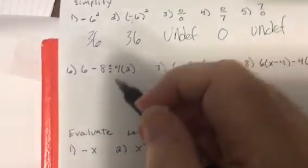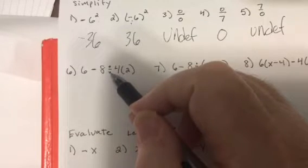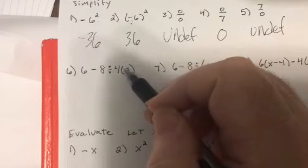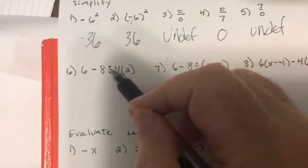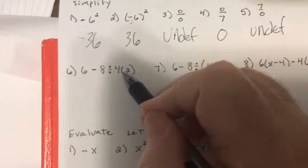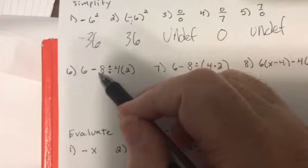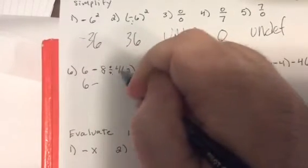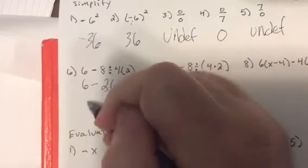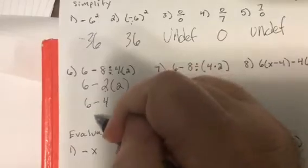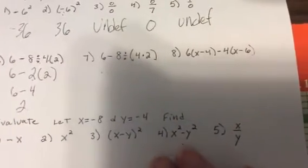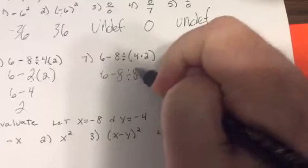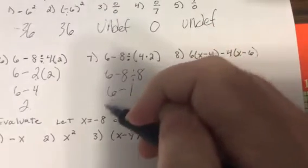Okay, let's look. This one always gets people wrong. Order of operations: division and grouping are the same, but this is multiplication, not grouping. Multiplication and division are the same level, so I do it left to right. Minus is the lowest level, so I leave it alone. Eight divided by 4 is 2, and then 2 times 2 is 4, so the answer is 2. Notice this is grouping, so it's 6 minus 8 divided by 8, so 6 minus 1, which is 5.